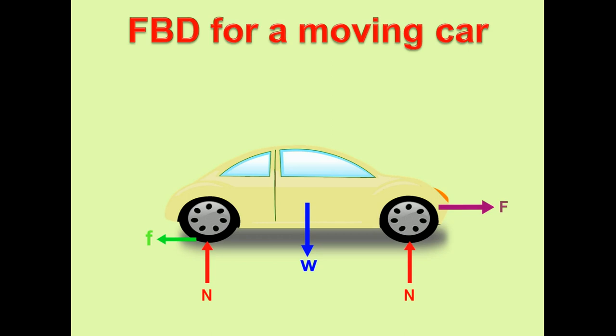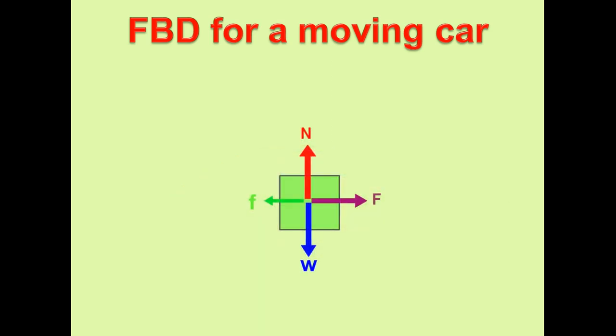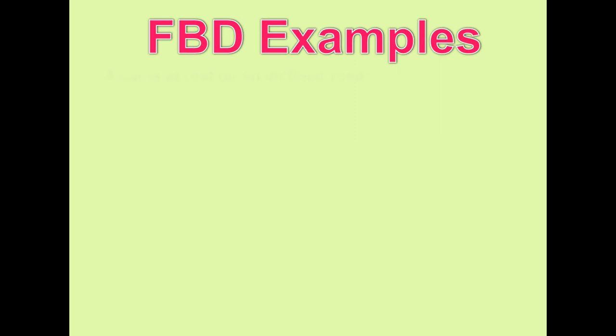In FBD, we have to show like this. Look here. Length of the arrow of capital F is more than the length of small f because it is moving. That means F is greater than small f.